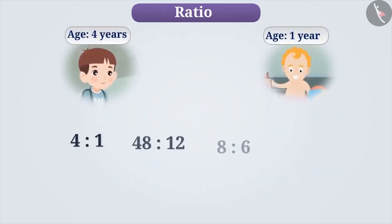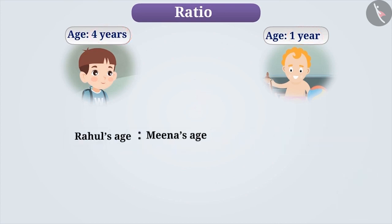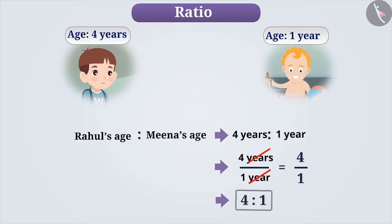Till now, we have represented all the ratios without units. The reason is: we can write the ratio of Rahul's age to Meena's age as 4 years is to 1 year, which in fraction form is 4 years by 1 year. Since the units in numerator and denominator are the same, we can cancel them. We get the fraction 4 by 1, which is without units. It can be represented in ratio as 4 is to 1. That is why there are no units for any ratio.